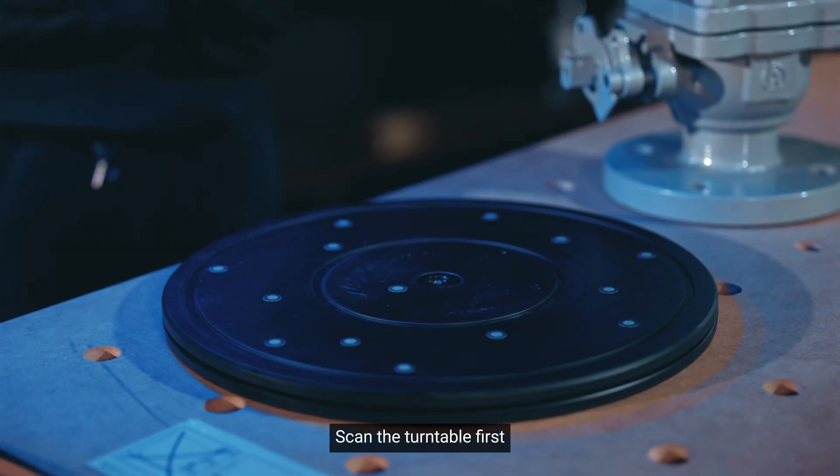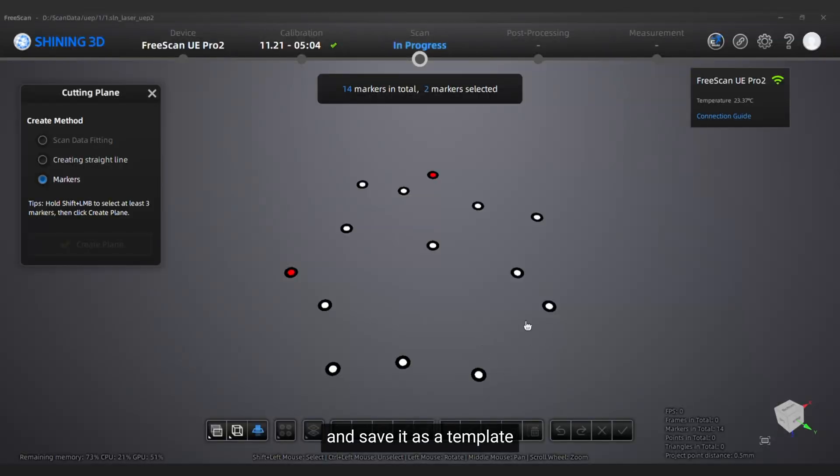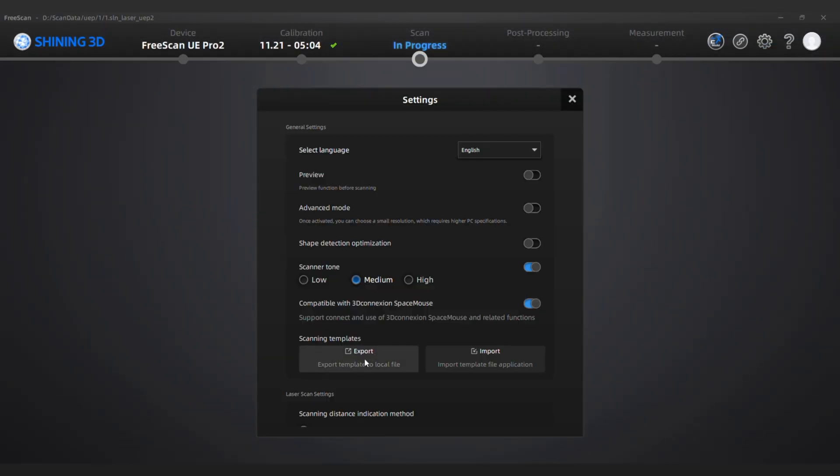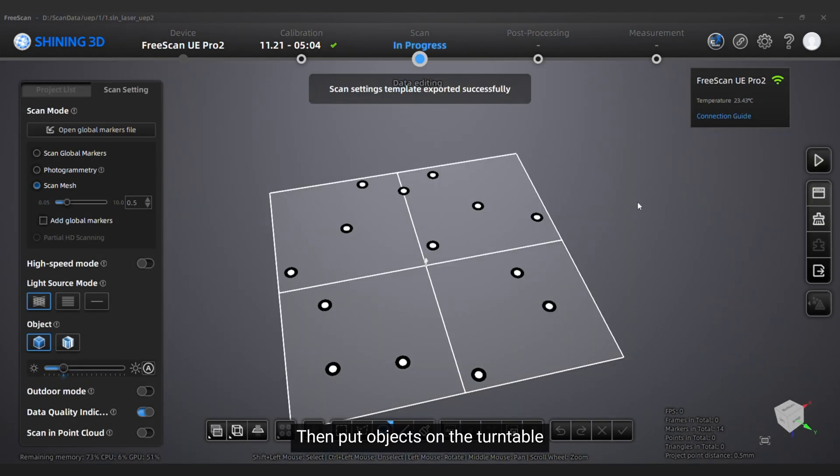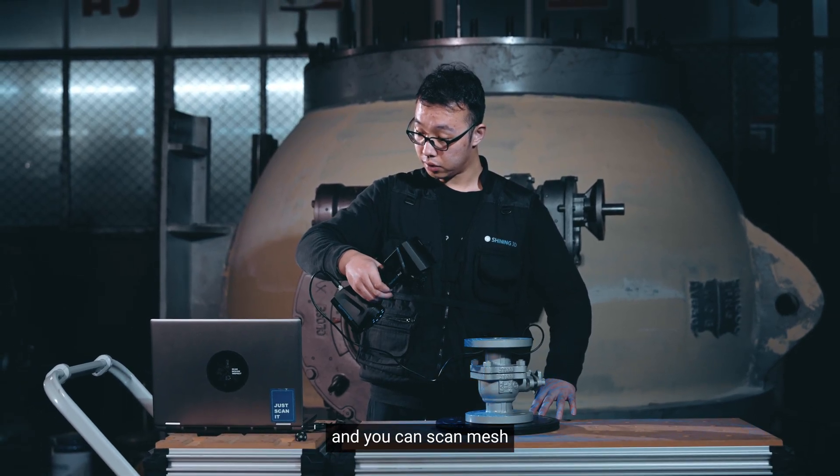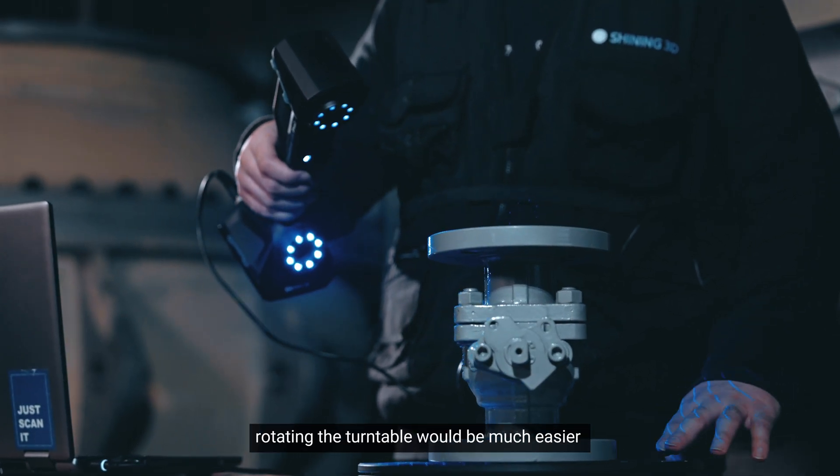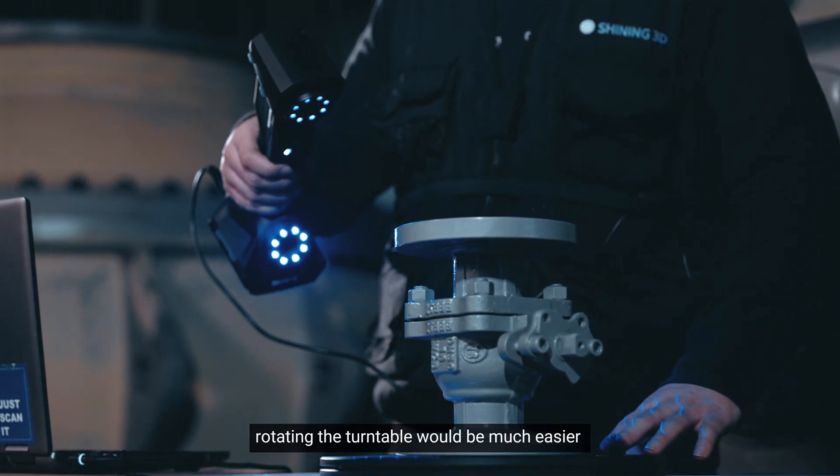Scan the turntable first, create a cutting plane and save it as a template. Then put objects on the turntable and you can scan mesh. Instead of moving around the scanner, rotating the turntable would be much easier during the scanning.